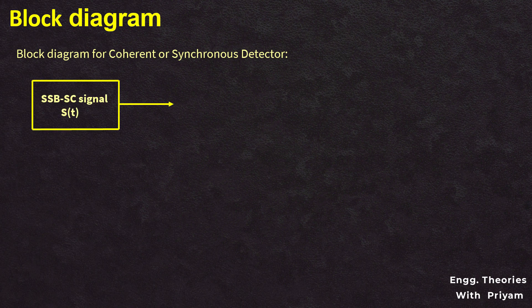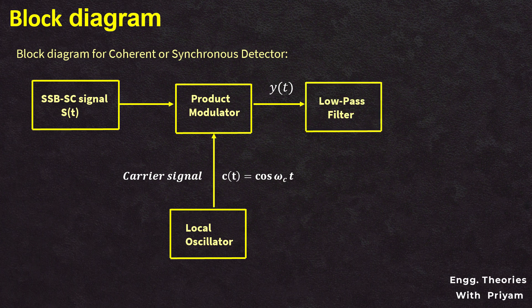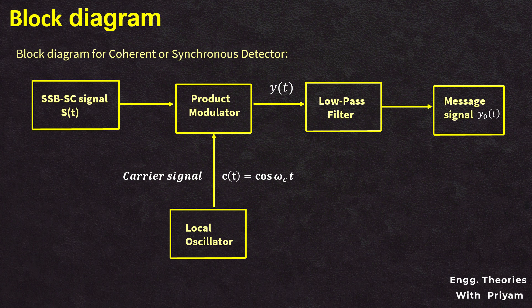In the block diagram, the SSBSC modulated signal s(t) is given as the input to the product modulator. Another input is the carrier signal c(t) = cos(ωc·t), generated by a local oscillator. The output of the product modulator, y(t), equals s(t) multiplied by c(t). This output is passed through a low-pass filter with cutoff frequency ±W, and the output y₀(t) is our desired demodulated message signal.